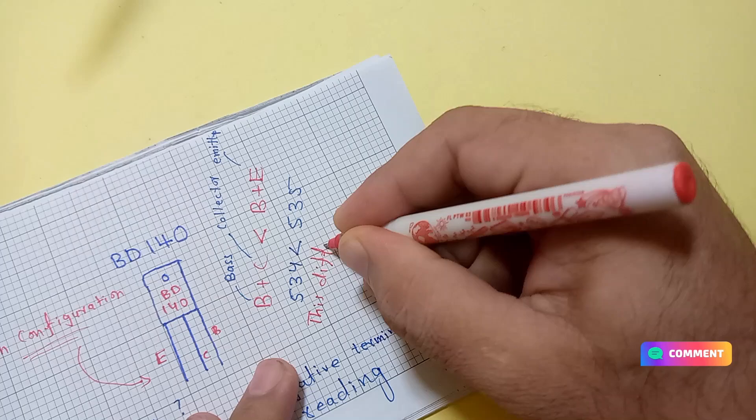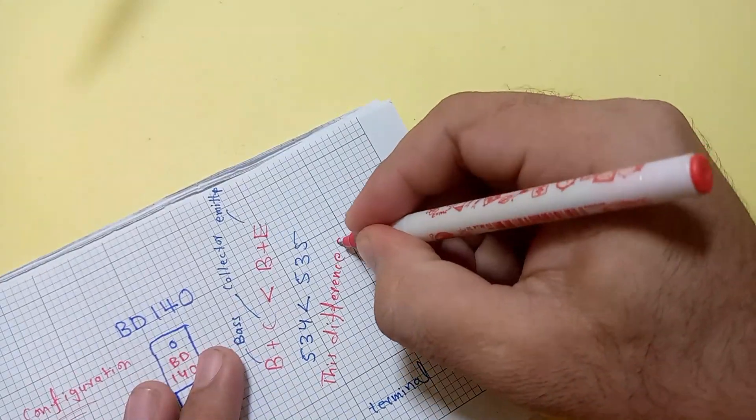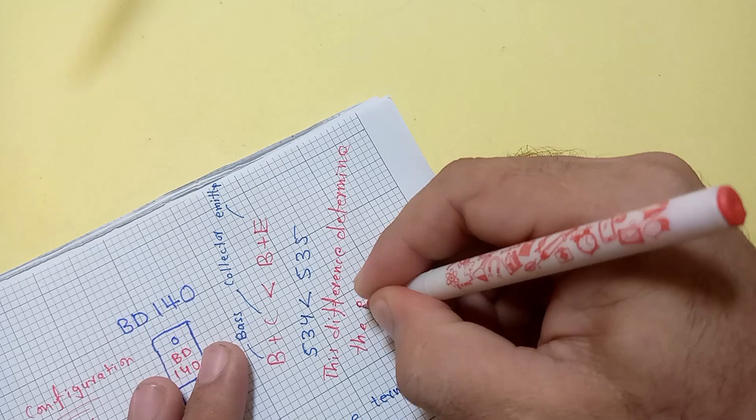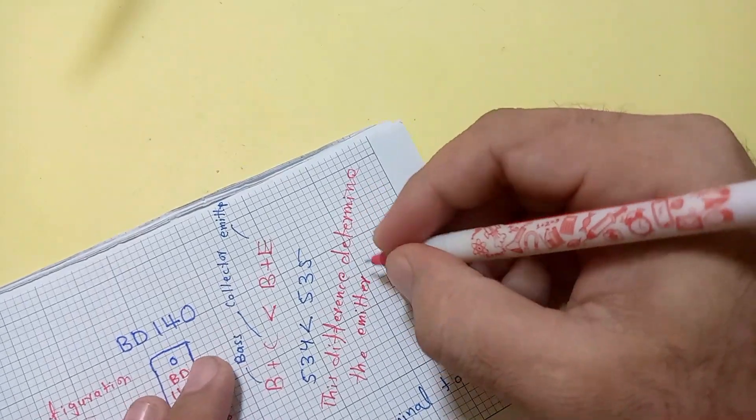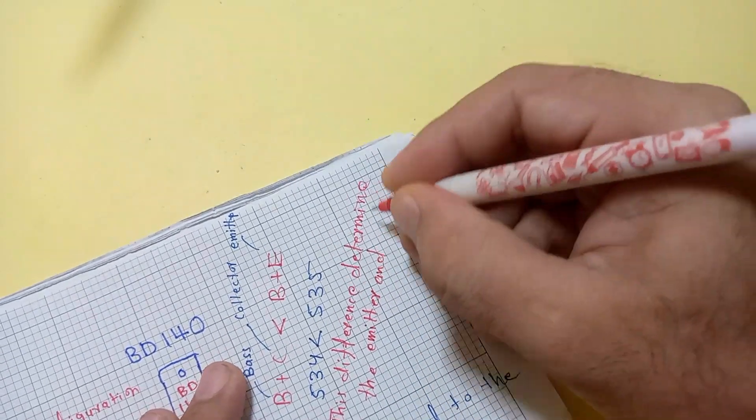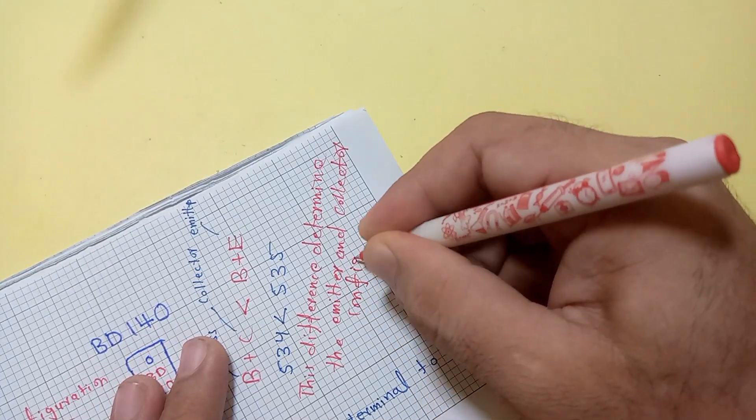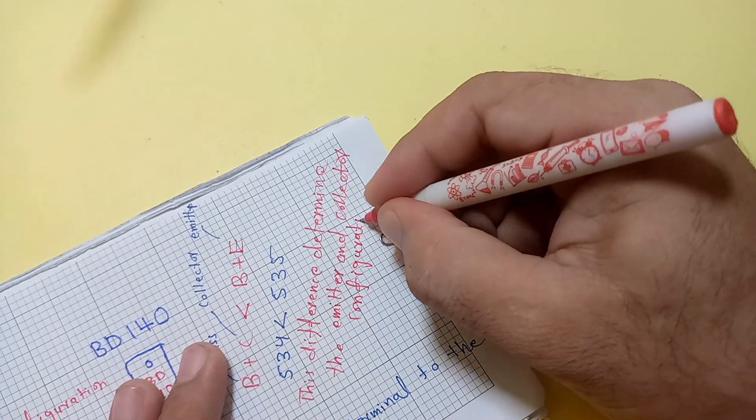This difference in the reading of both pins determines the pin configuration of any type of transistor - which one is collector and which one is emitter. Thanks for watching, stay with us for more videos.